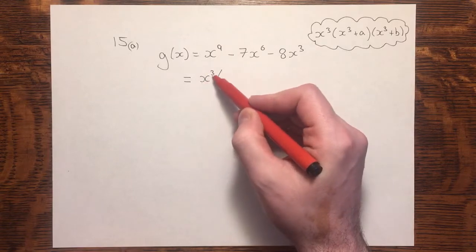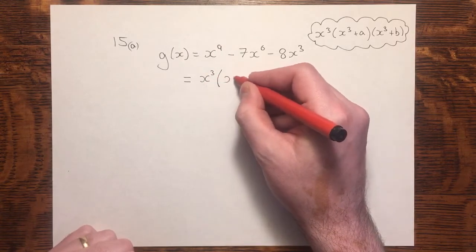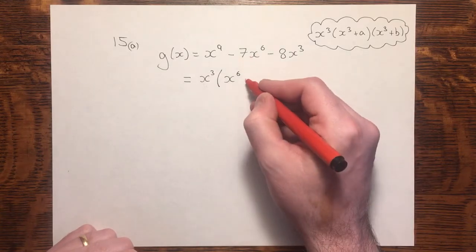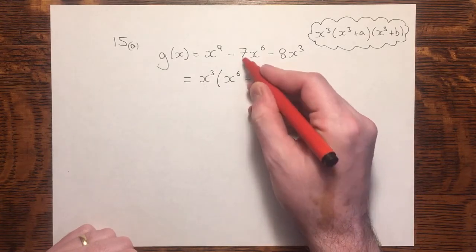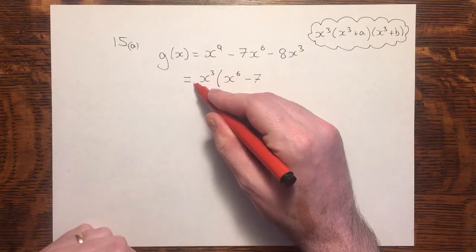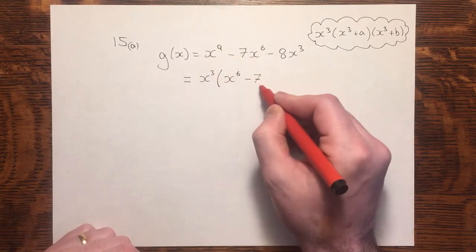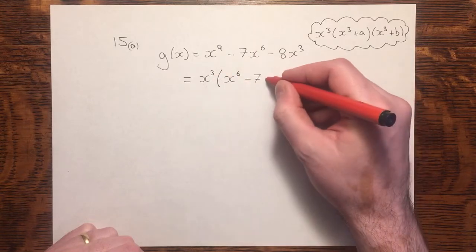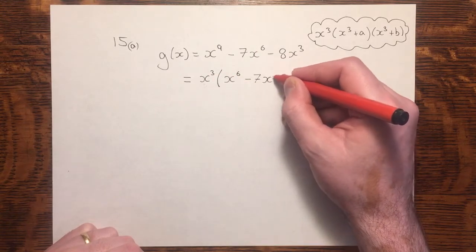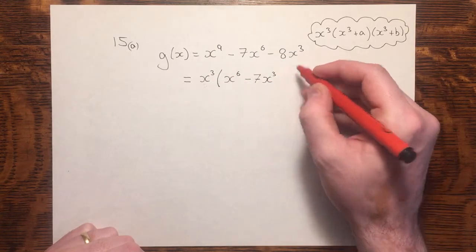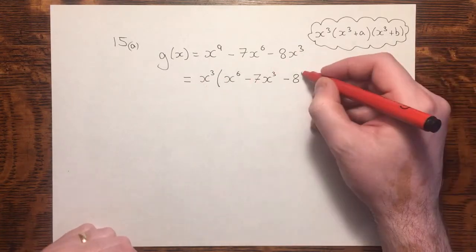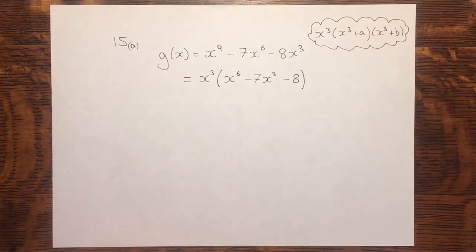x to the power 9 divided by x to the power 3 will leave x to the power 6. The coefficient's unaffected, because there's no coefficient here, or rather there's 1, and minus 7 divided by 1 is still minus 7. x to the 6 divided by x to the 3, 6 minus 3 leaves 3, and here the minus 8 remains. x cubed divided by x cubed just leaves us with the minus 8.